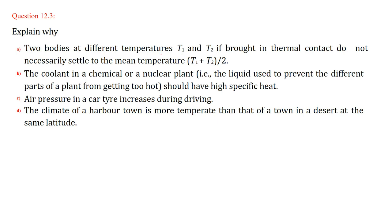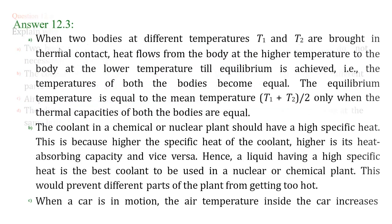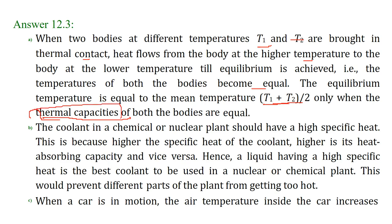Explain why two bodies at different temperatures T1 and T2, if brought in thermal contact, do not necessarily settle to the mean temperature (T1 plus T2) by 2. For this to happen, the bodies have to have the same characteristics. It is not always true that the equilibrium temperature will be exactly the average T1 plus T2 by 2. When two bodies at different temperatures are brought in thermal contact, heat flows from the higher temperature body to the lower temperature body until equilibrium is achieved. The mean temperature is only achieved when the thermal capacities of both bodies are equal.